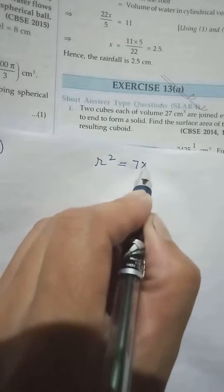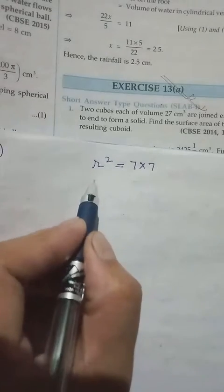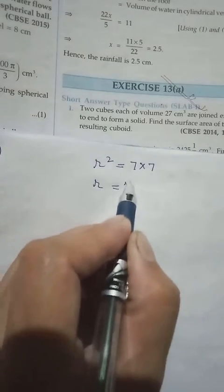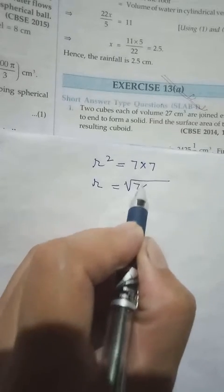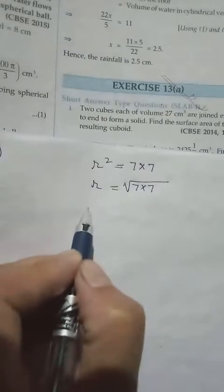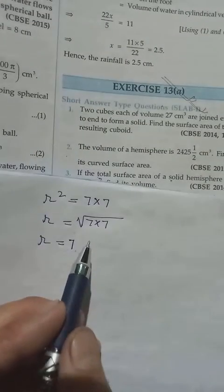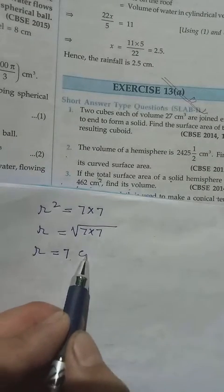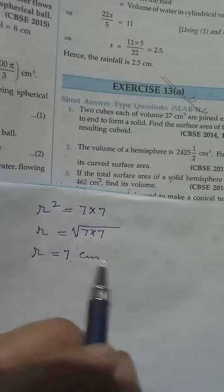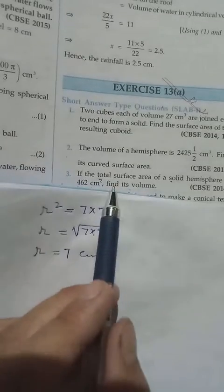Radius, we can put square root on the other side. So square root of 49 we can take out as 7. That means the radius of the hemisphere now equals 7 cm.